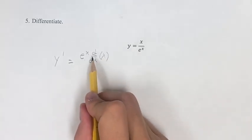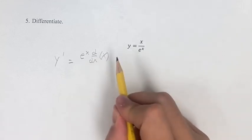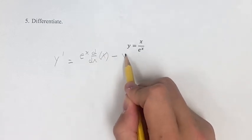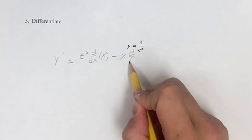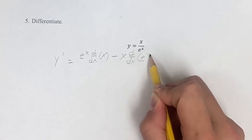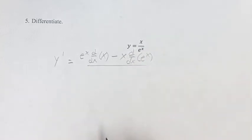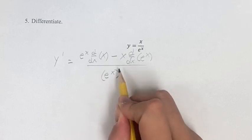So e to the x times the derivative of x, minus the numerator times the derivative of the denominator, which is x times the derivative of e to the x. All of that is over the denominator squared.